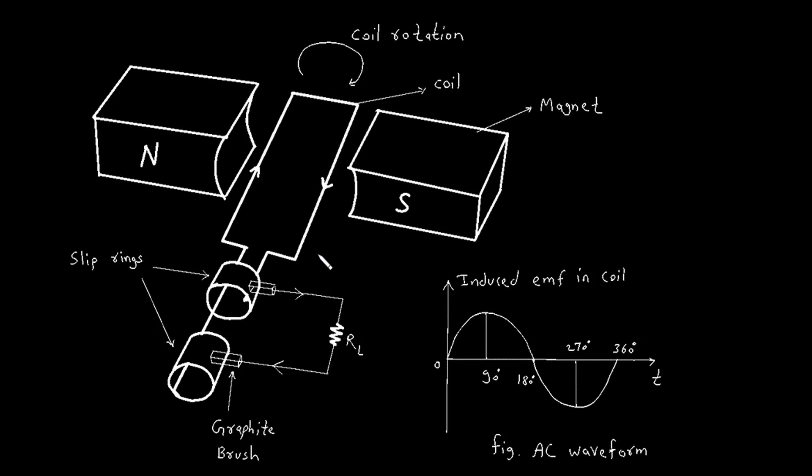According to Faraday's law of electromagnetic induction, whenever there is a change in the magnetic flux through a coil, an electromotive force, or EMF, is induced in the coil. This is the fundamental principle behind the operation of an AC generator.